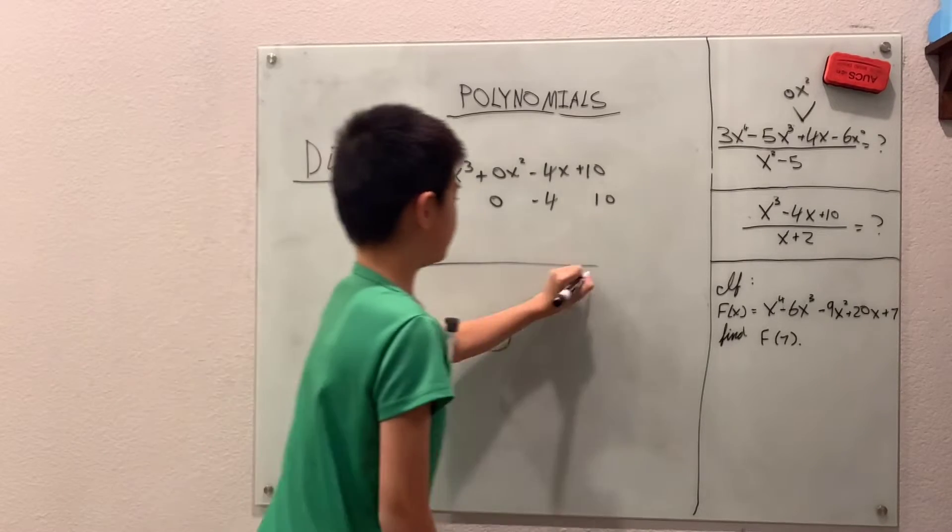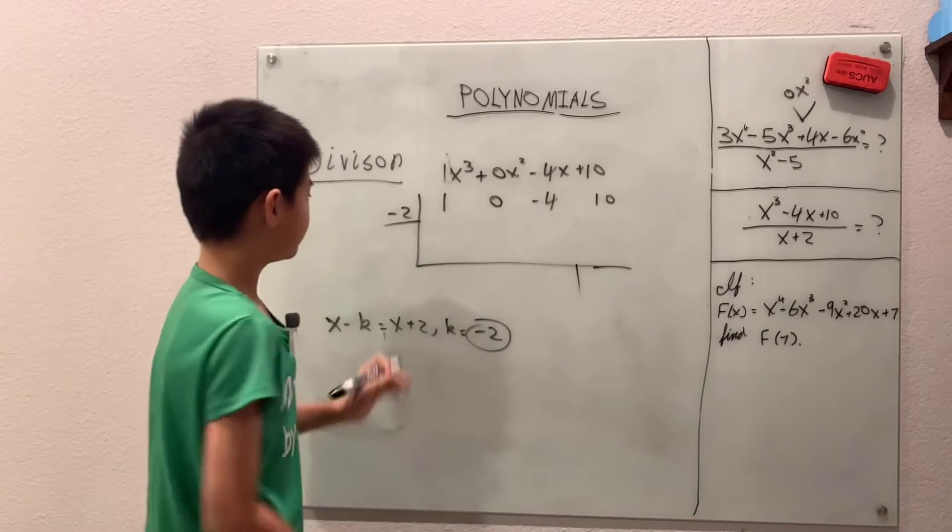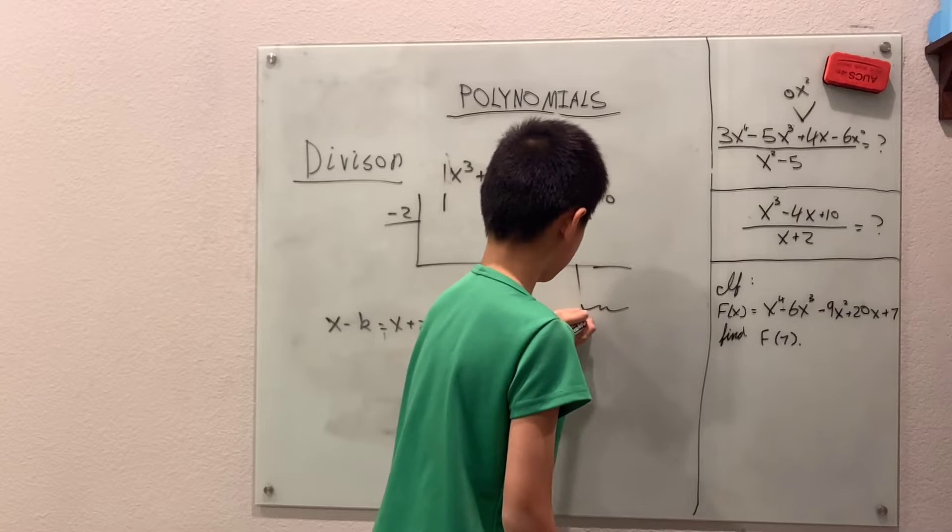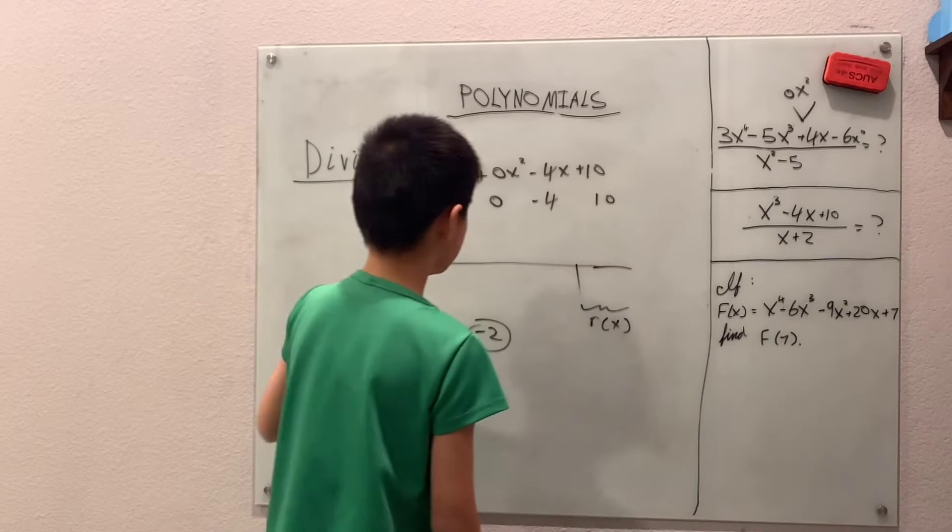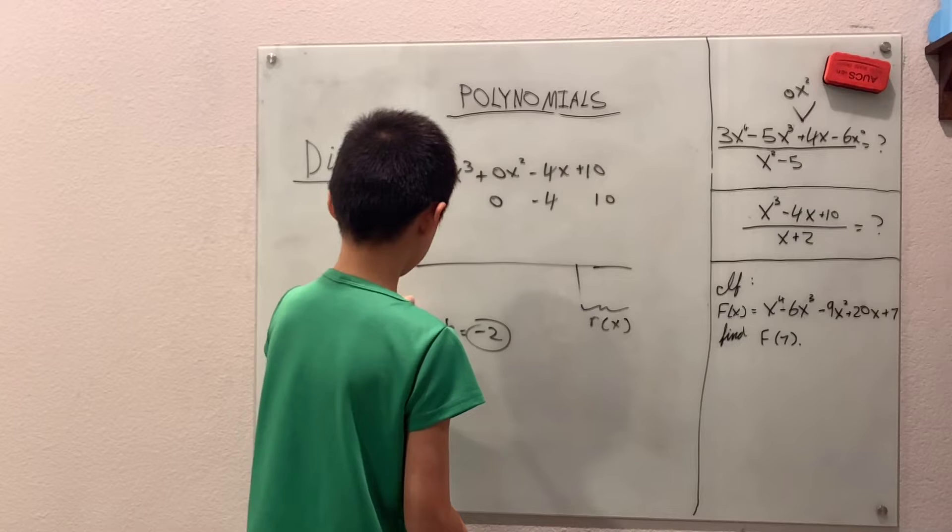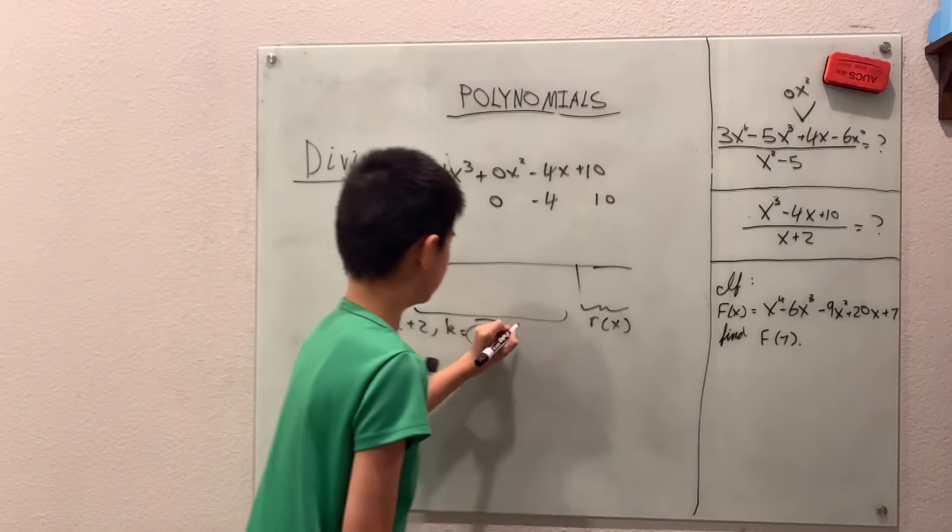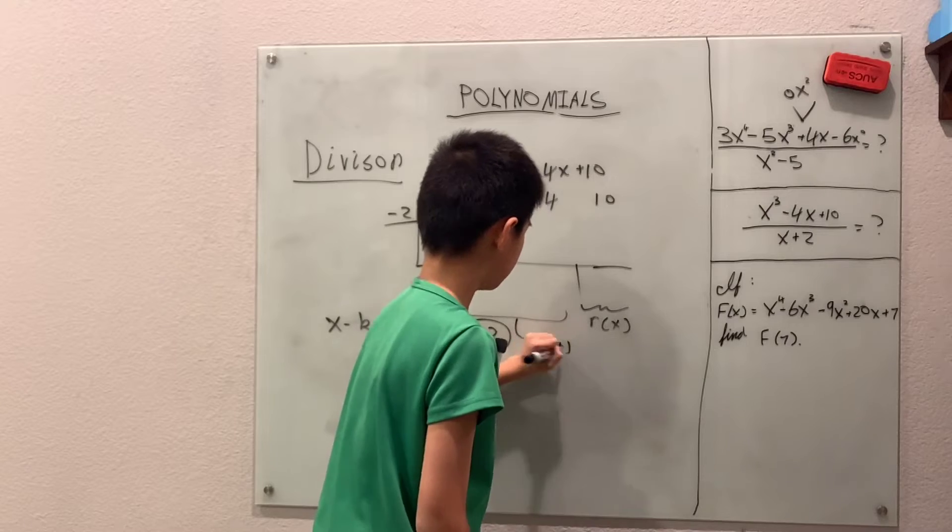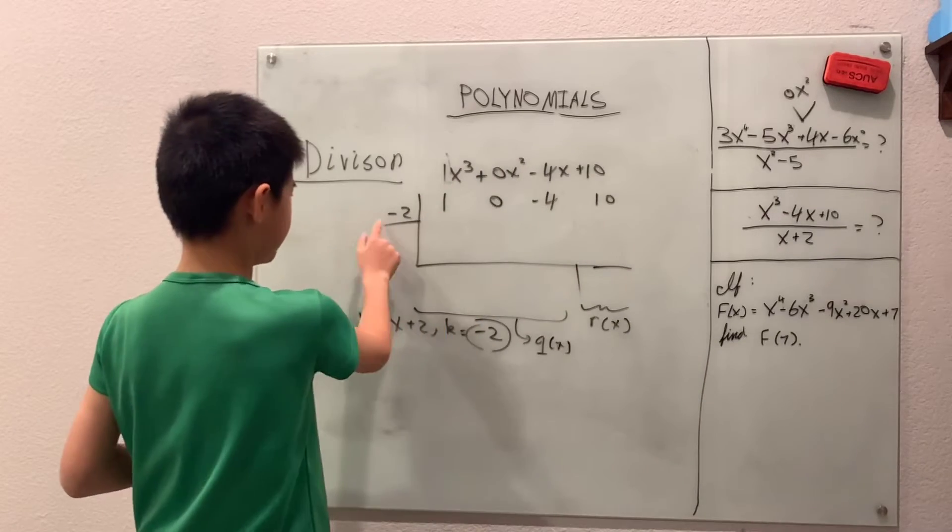So basically this is how we do it. Now in some cases you won't see these two little bars here, but this bar basically just means r(x), the remainder, and whatever we get down here is going to be the q(x), quotient. And of course that's f(x) and this is the d(x).